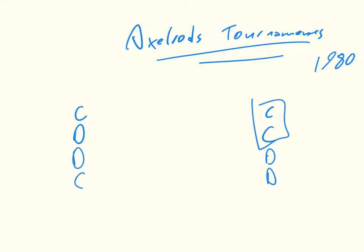Robert Axelrod had a tournament where people submitted strategies, and the very first tournament he ran in the 1980s had 15 different strategies. These are strategies for a repeated game — they take into account the entire history of play so far and map to an action. He also included a 16th player that just played randomly, completely flipping a coin every time. Some of these strategies are very complicated — using chi-squared tests to figure out if the other player was playing randomly.